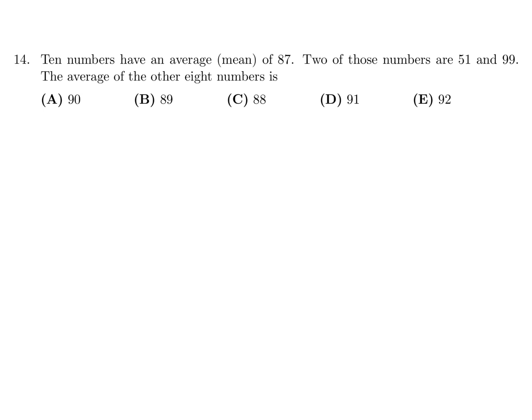Ten numbers have an average mean of 87. Two of those numbers are 51 and 99. The average of the other 8 numbers is. So 10 numbers have an average of 87. Their total sum would be 10 times 87, which is 870. So from that sum, I will subtract those two numbers that they have mentioned. And when I do, I will get 720. And from that 720, I will figure out the average of that. And that consists of 8 numbers, so divide by 8. And when you do, you get 90. So number 14, the answer is A.